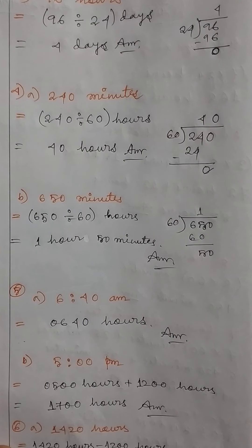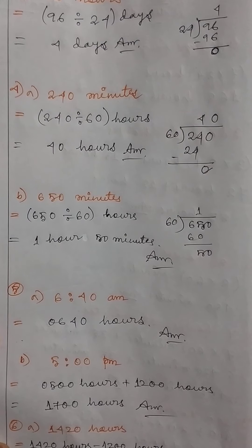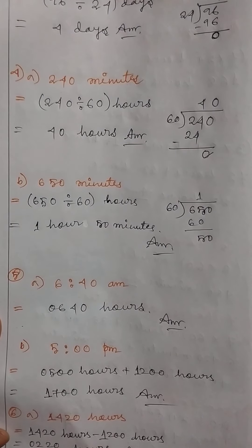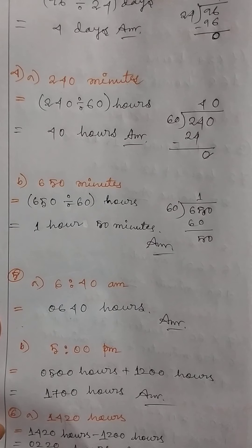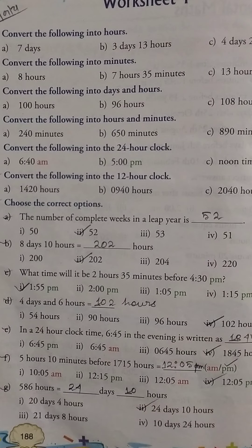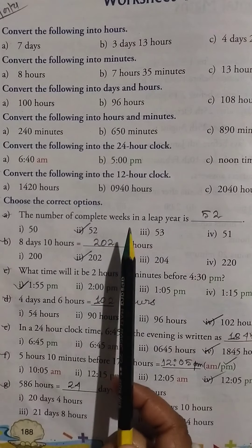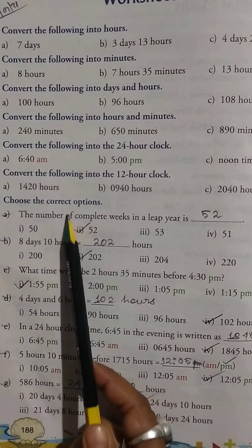Number 7: Choose the correct options. The number of complete weeks in a leap year is 52. 8 days 10 hours equals 202 hours. What time will it be 2 hours 35 minutes before 4:30 pm? 1:55 pm.